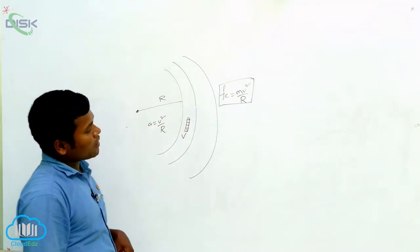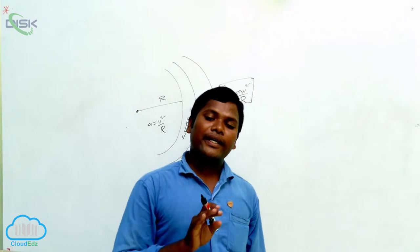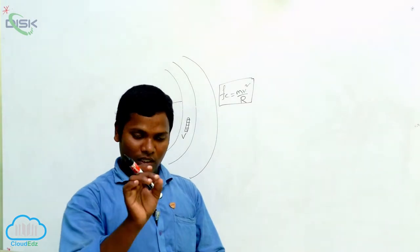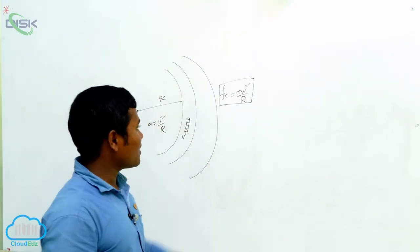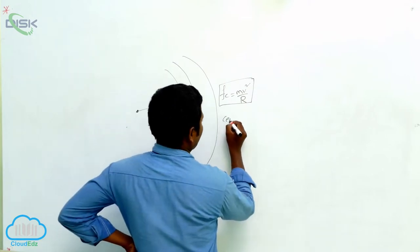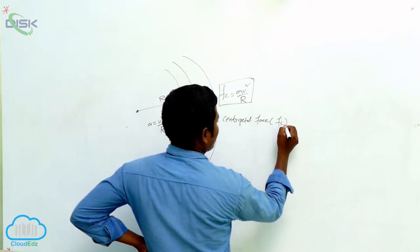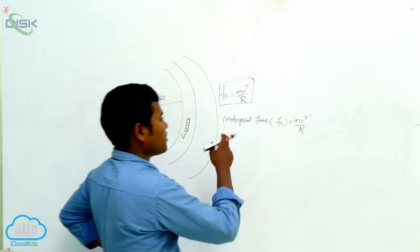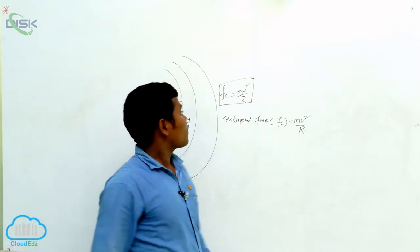When centripetal force is acting, it acts towards the center point. If we consider the wheel of the car and the surface, the tire has the wheel as the center point, and the force acts towards that center point. That force is the centripetal force. The formula is Fc equal to mv square by r. The acceleration a is v square by r.